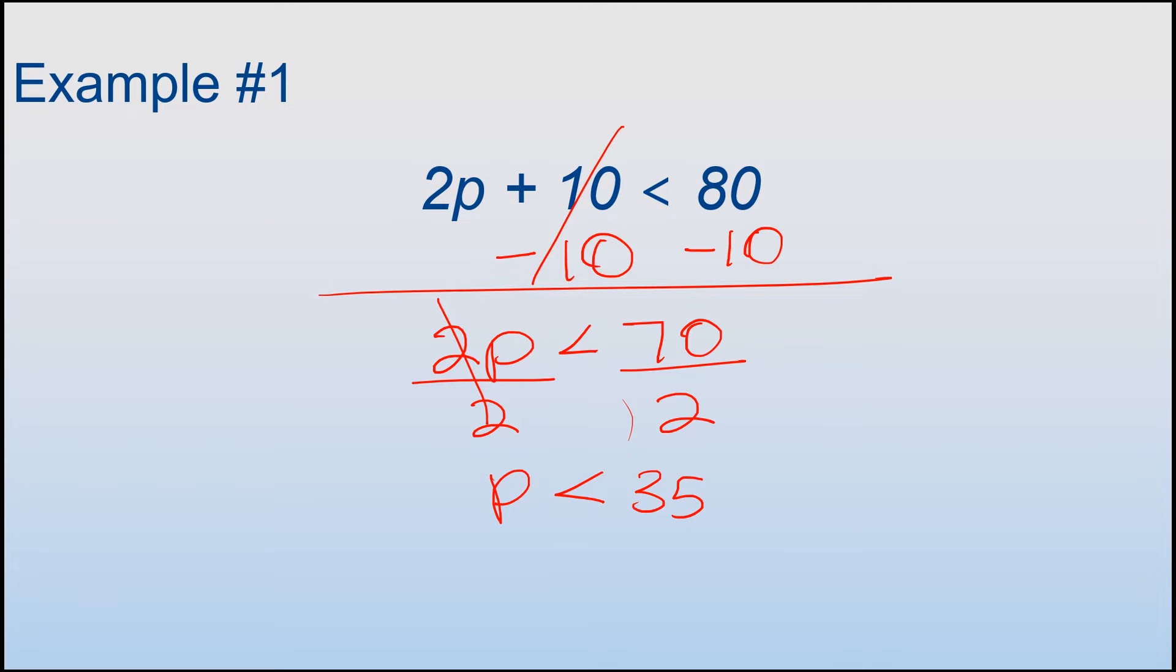So let's say I plug in 34 for p. I could say 2 times 34 plus 10 is less than 80. So as long as whatever I get on this side is less than in value, like literally less in value than 80, then that means I solved correctly.